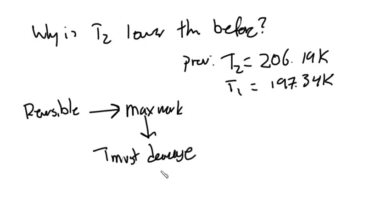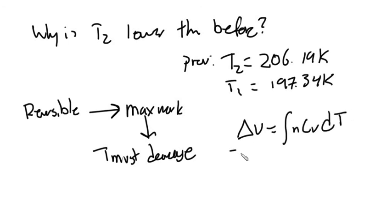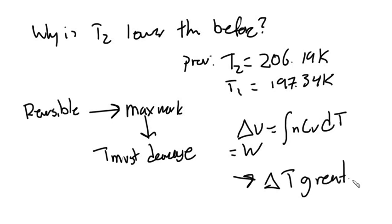This makes sense: if more work is extracted from the system — as indicated by the larger negative work value — then something must decrease more compared to the previous problem. In this case, it is the temperature, because internal energy delta U equals n·Cv·delta T, which equals work. With more work and constant moles and heat capacity (5/2 R for an ideal gas), the integral must span a larger temperature range, so the final temperature must be lower.